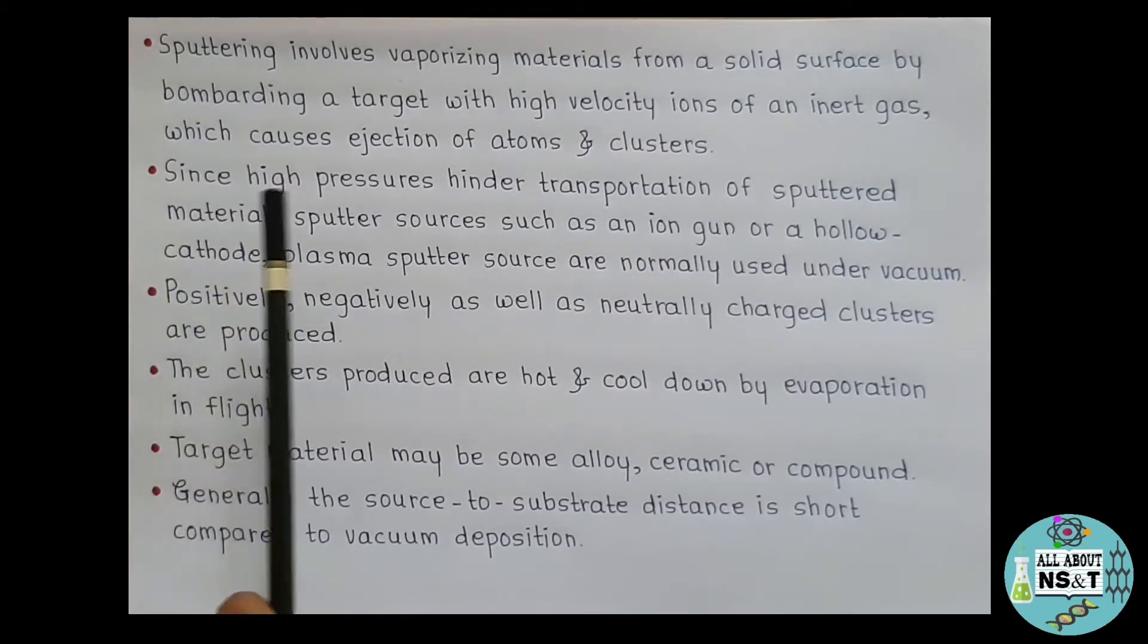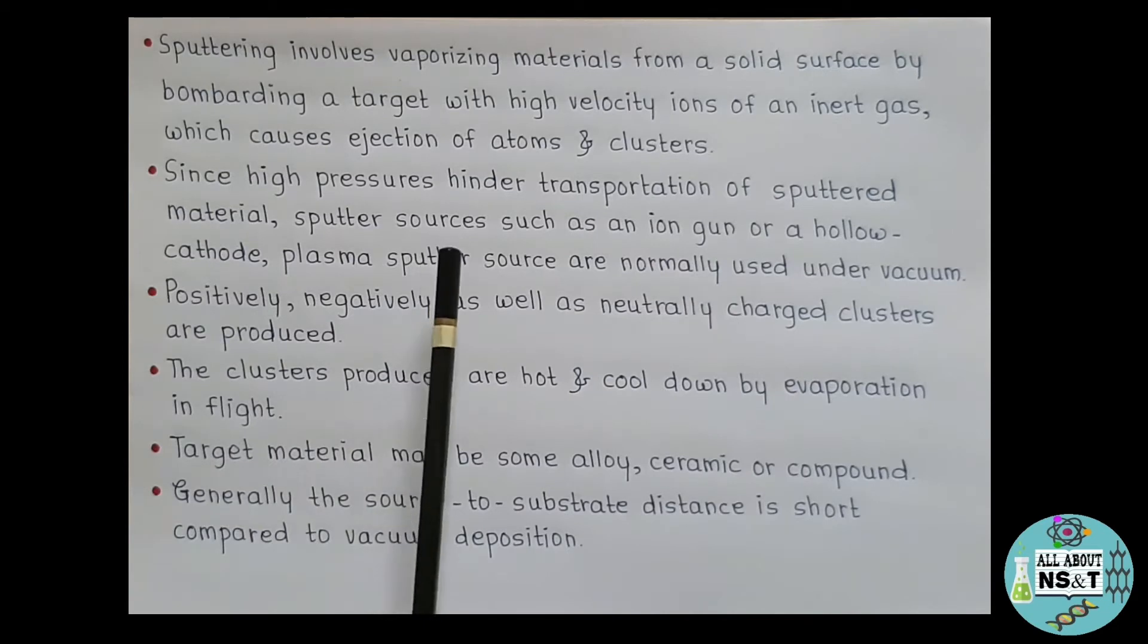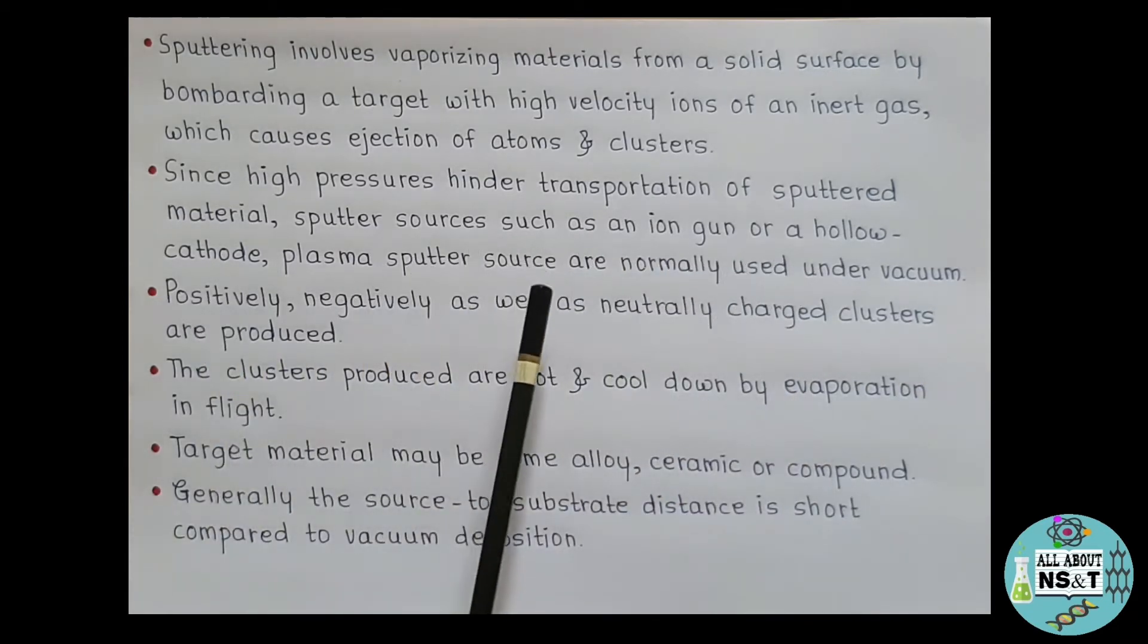Next, since high pressures hinder transportation of sputtered material, sputter sources such as an ion gun or a hollow cathode plasma sputter source are normally used under vacuum. So basically sputtering is carried out in vacuum in order to achieve smooth transportation of sputtered atoms from the target to substrate.